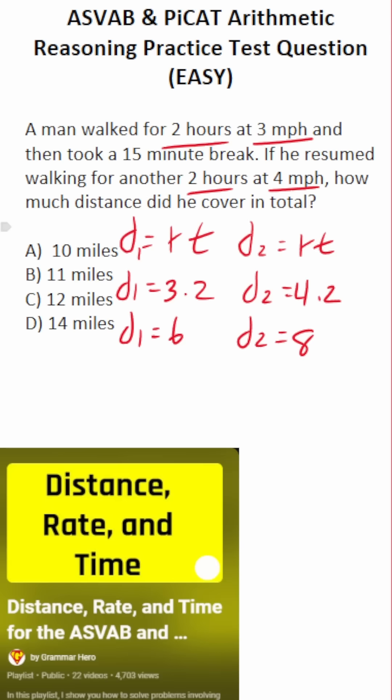The question is, how much distance did he cover in total? So the total distance that he covered is going to be equal to D1, that is the distance he covered before his break, plus D2, that is the distance he covered after his break, which is six plus eight or 14.